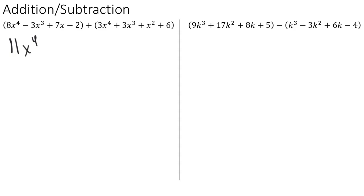Moving on to the next term, we have negative 3x to the 3rd here and a positive 3x to the 3rd here. Those are like terms, so we add those together. Negative 3 plus positive 3 is 0, so technically we can say plus 0x to the 3rd. Looking at the next term, we see we have a 7x in the first polynomial, but in the second polynomial we don't have any terms that are like terms with it, so we're just going to leave it plus 7x.